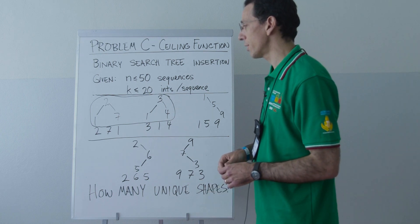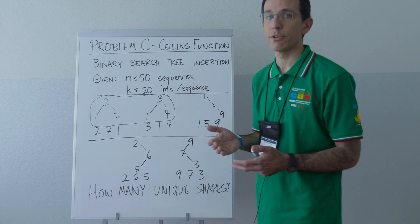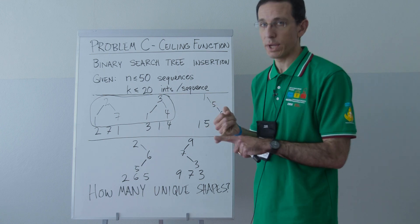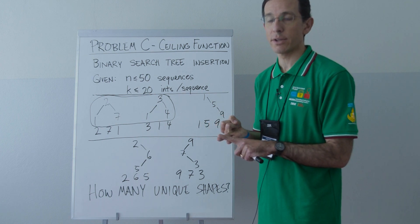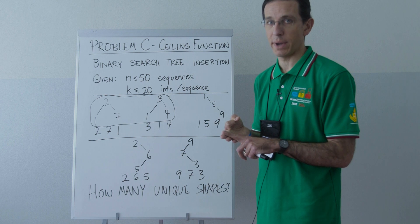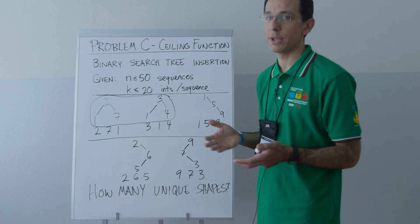So this is fairly straightforward. We can just implement the straightforward solution: read in all the data, insert everything into its own binary search tree, and then keep track of all those binary search trees and somehow determine their uniqueness.